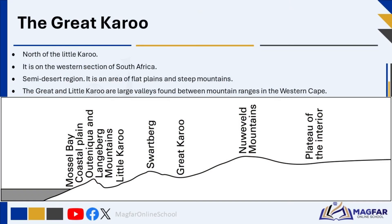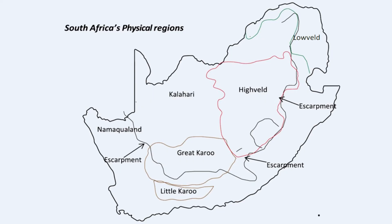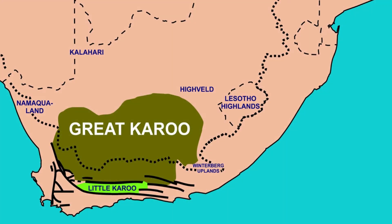The Great Karoo is found south of the escarpment and north of the Little Karoo, on the western section of South Africa. The Great Karoo is a semi-desert region — an area of flat plains and steep mountains. The Great and Little Karoo are large valleys found between mountain ranges in the western Cape. The Great Karoo is much bigger in size compared to the Little Karoo, which is why one is called Great and the other Little.